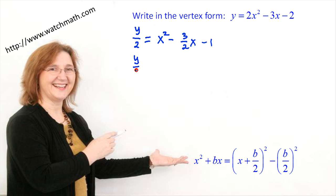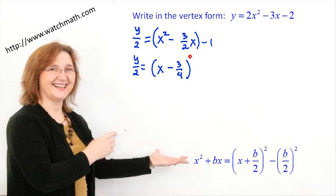Now, once we have the function in this form, we can apply the identity to x squared minus 3/2 x. We change this into a difference of two squares: x plus half of the coefficient of x, squared, minus that half squared. Half of negative 3/2 is negative 3/4, so we write x minus 3/4 squared, minus 3/4 squared, minus 1.